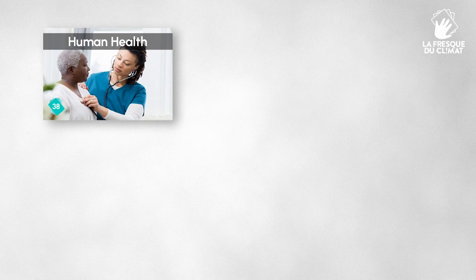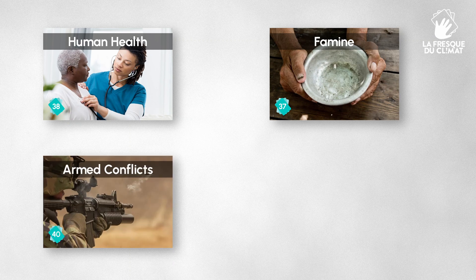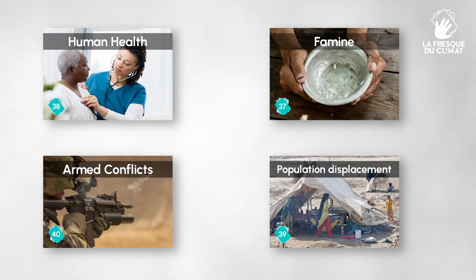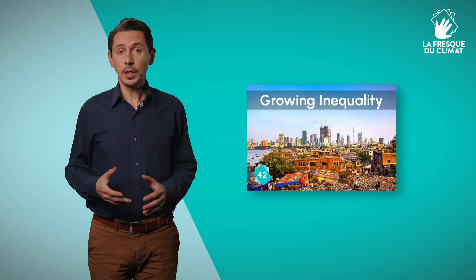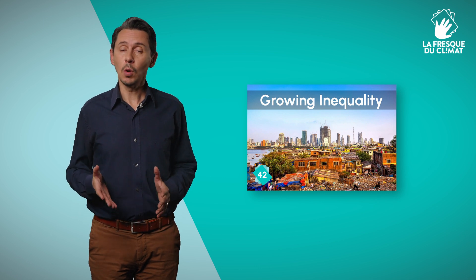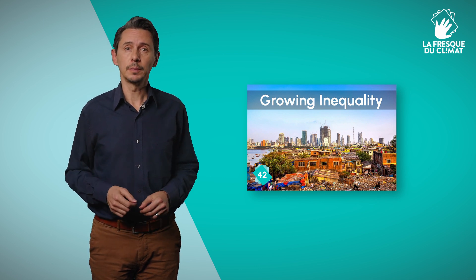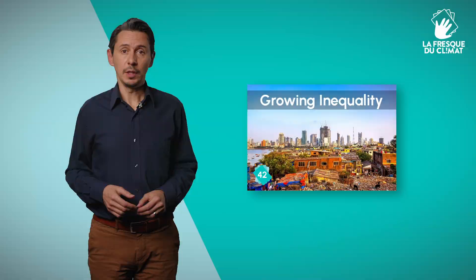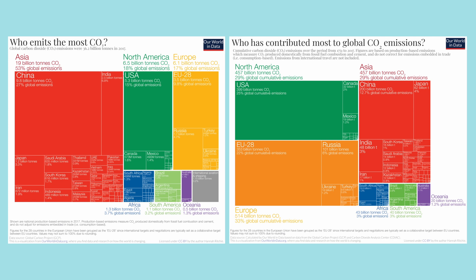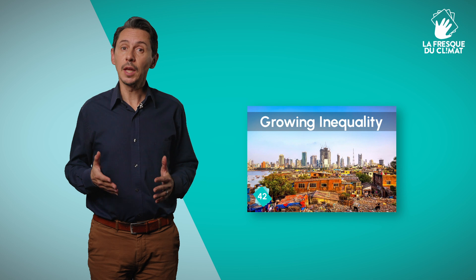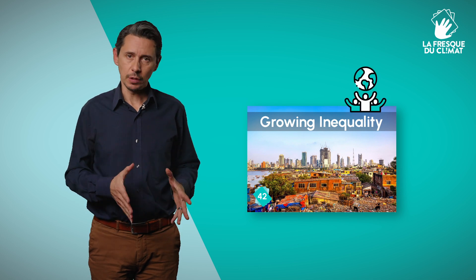As with the human health, famines, armed conflicts, and population displacement cards, you can choose to use this card as a discussion tool during the last phase of the workshop. You can point to it when talking about orders of magnitude — for example, if you present the graph on the distribution of emissions and living standards, or the graph on cumulative greenhouse gas emissions.